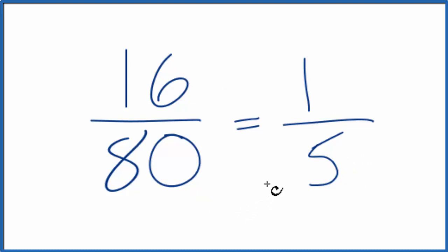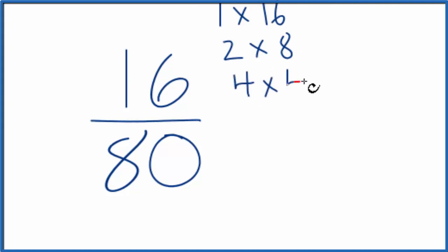Another way we could do this is list the factors. So for 16, we have 1 times 16, 2 times 8, and then 4 times 4.